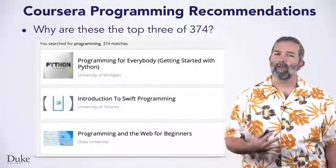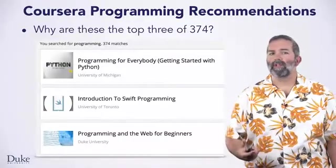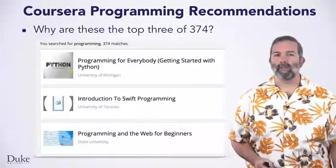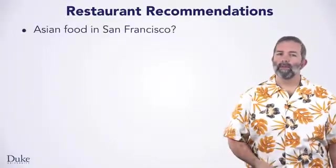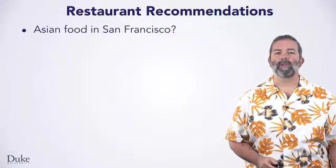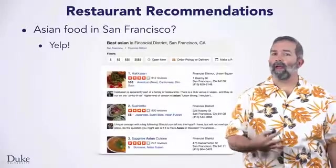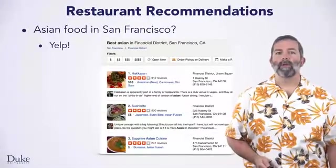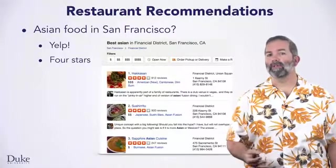How does the engine behind the creation of this webpage decide what courses to show? Is it based on ratings? Some other criteria? Note, the third recommendation is for the first course in the specialization for this capstone. You can also get restaurant recommendations rather than programming recommendations. Suppose you're going to be in San Francisco and you're looking for Asian food near the financial district. You could use Yelp, an app and website, for getting recommendations from users — that is, diners. You could filter by location, as I've shown here, finding Asian food near San Francisco.